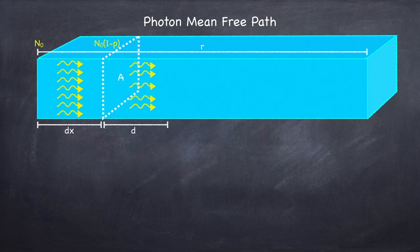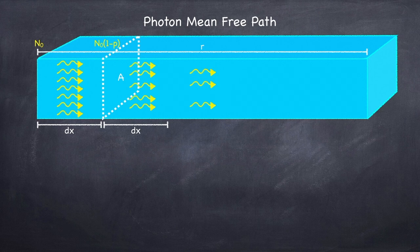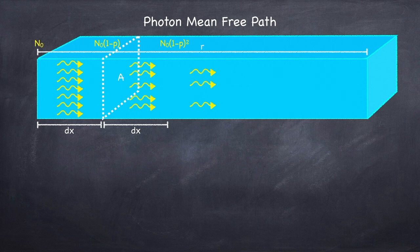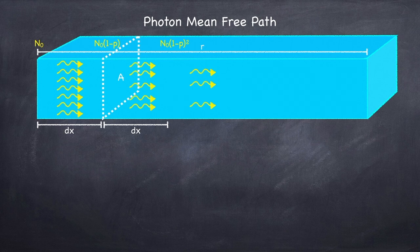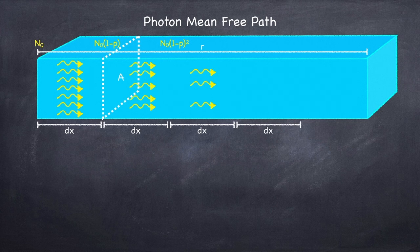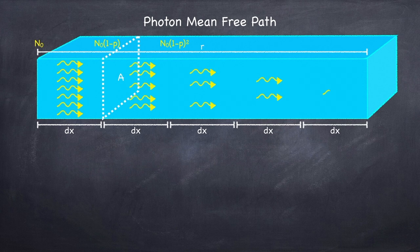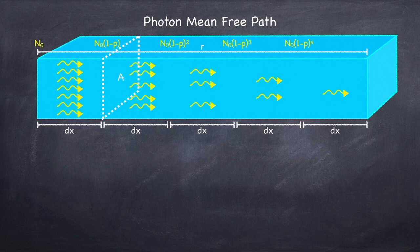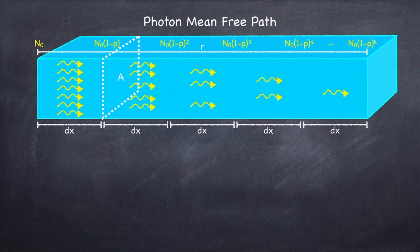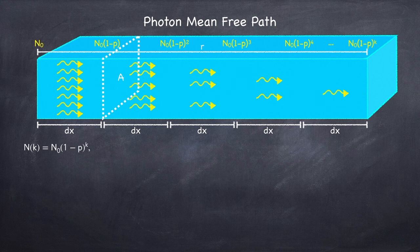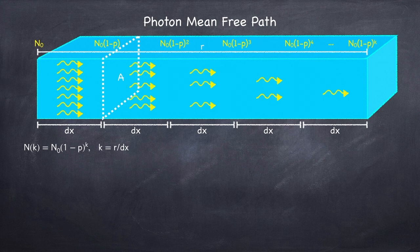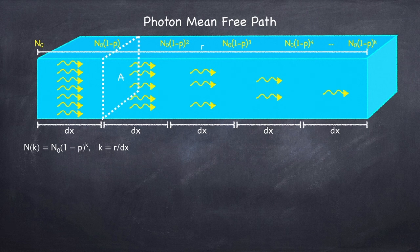Now we're going to repeat this process for another distance dx. Once again, the number of photons will be reduced by a factor of 1-p. So we're left with the initial number of photons times 1-p squared. Now we repeat this process until we've gone a distance r, each time reducing the number of photons by a factor of 1-p. If it takes k steps to go a distance r, then the number of photons remaining will be the initial number times 1-p to the k. Since it took k steps to go a distance r, we have that k equals r divided by dx.